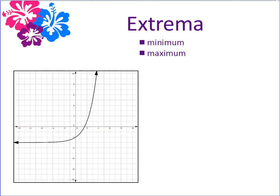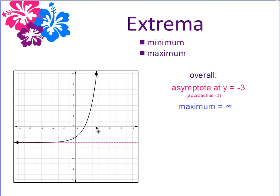Let's take a look at an exponential function. Minimums on exponential functions are a little more difficult to define. We know that this exponential function has an asymptote, and in this graph our asymptote is at y equals negative 3. So we can say that this graph approaches negative 3, but it's really difficult to define that specific minimum value since there really isn't one. It's easy to define the maximum, however — this graph is still going to continue in an upward motion forever, so our maximum is at positive infinity.